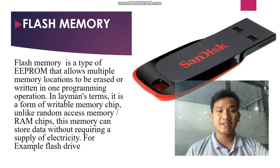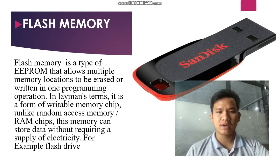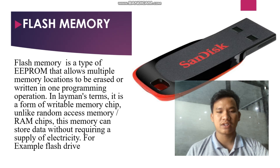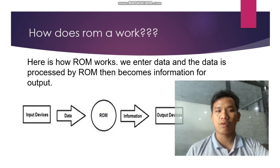Flash memory is a type of EEPROM that allows multiple memory locations to be erased or written in one programming operation. In layman's terms, it is a form of readable memory chips. Unlike RAM chips, this memory can store data without requiring a supply of electricity. For example, a flash drive — this is an image of a flash drive, which is a SanDisk.